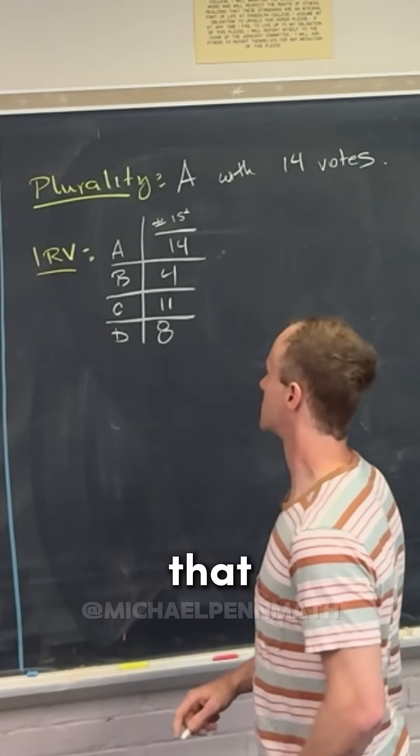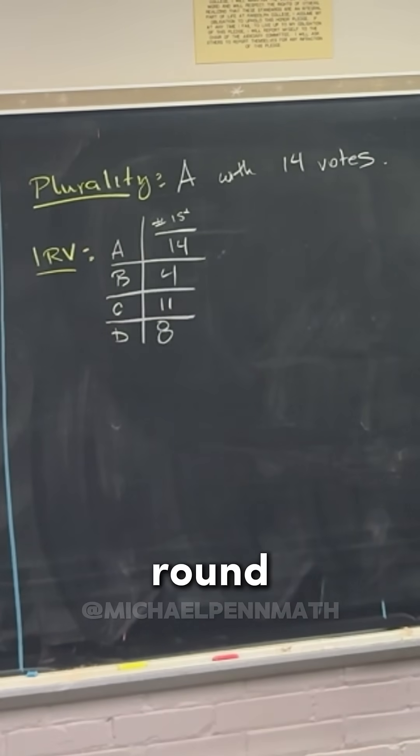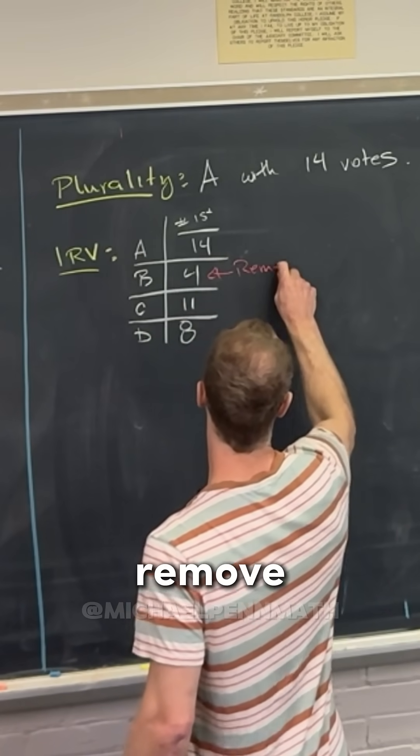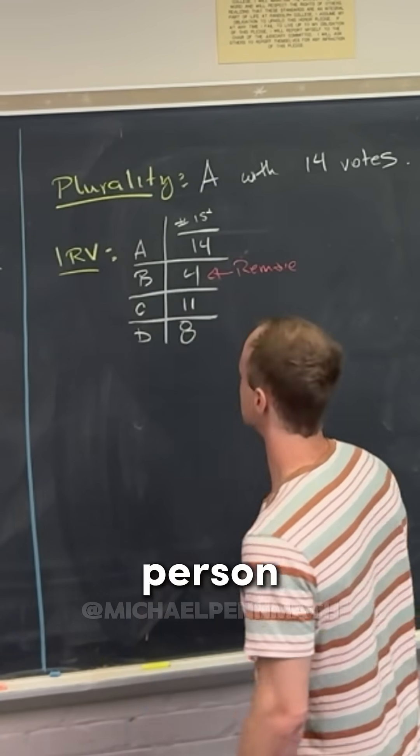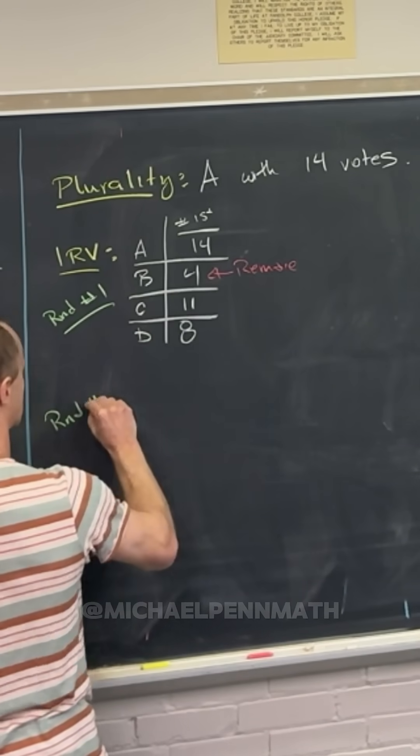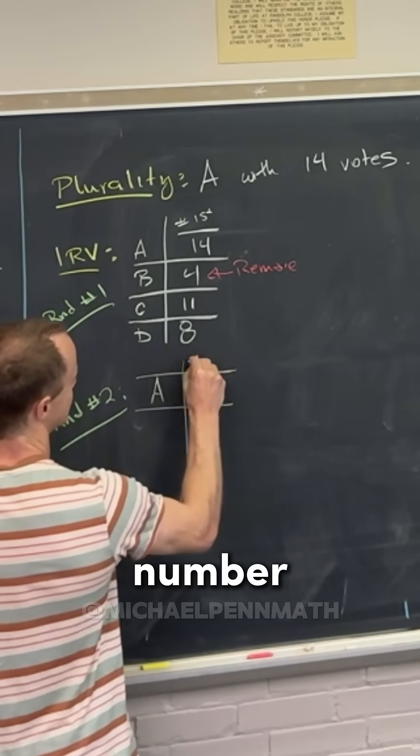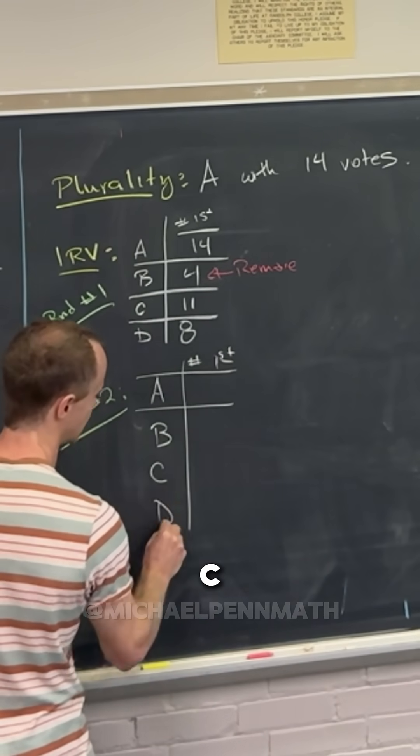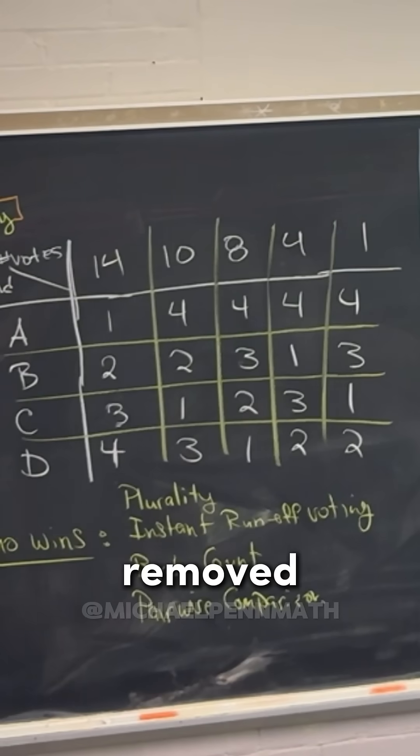Cool. So that means after the first round, who is thrown out? Yes, we remove this person. Let's look at round number two. So this is number first place votes again. So A, B, C, D. Okay. So we've removed B.